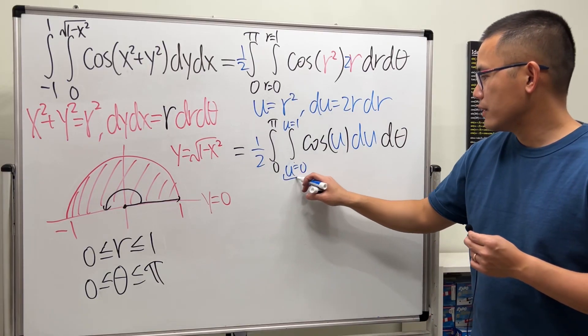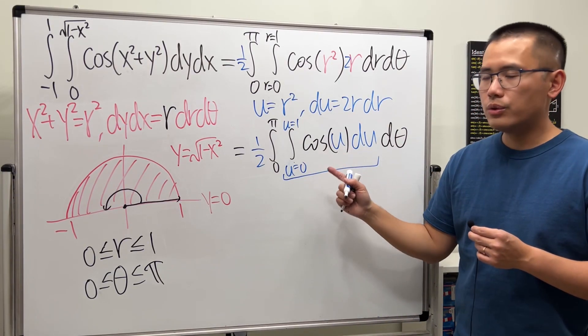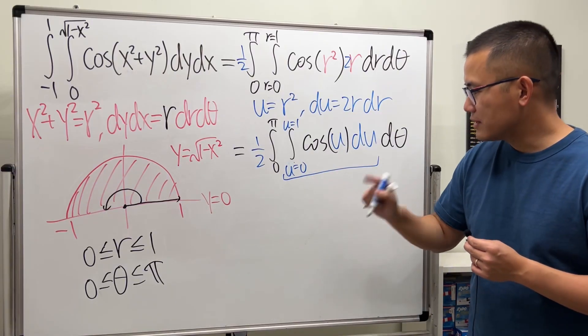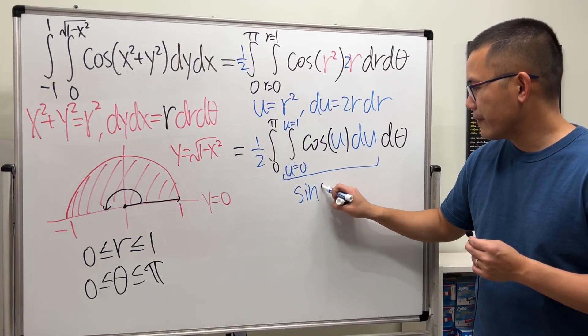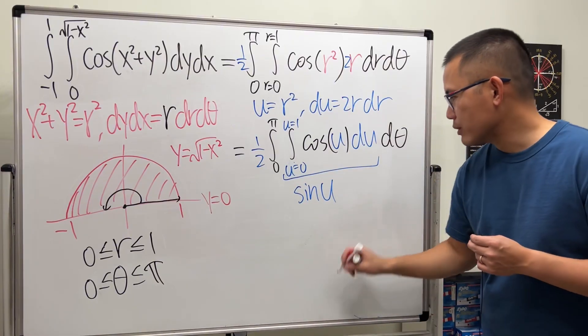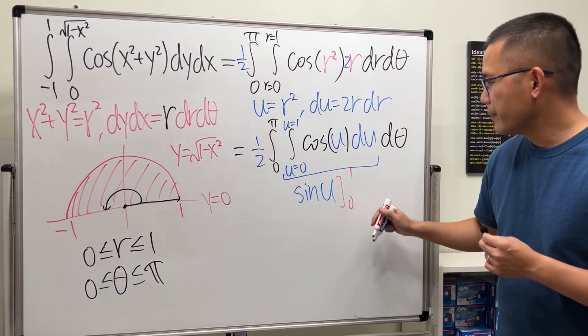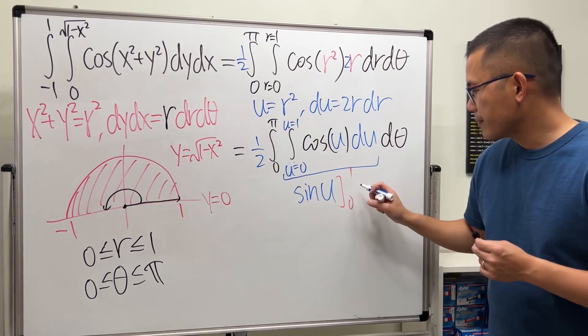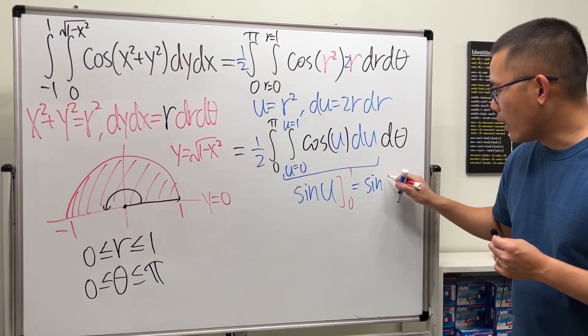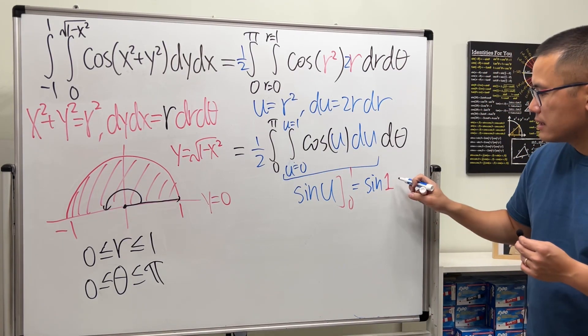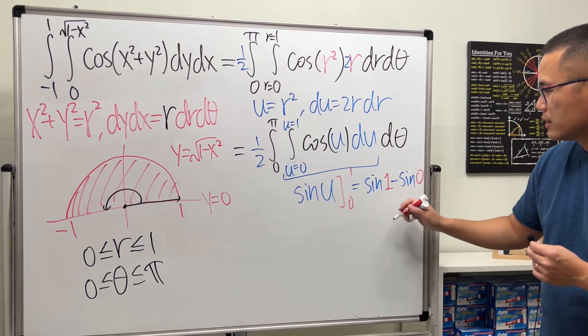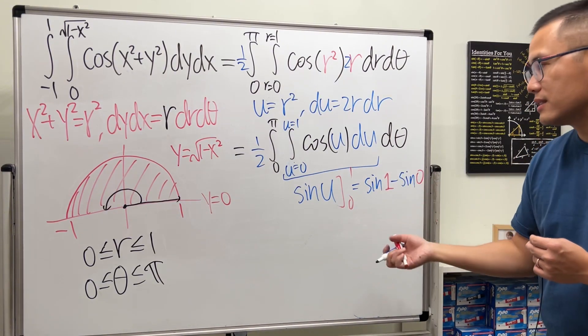Now let's just do this inside out. For this integral on the inside, integrating cosine u, we get positive sine u, and then we will just have to go from 0 to 1. So that will give us sine 1 minus sine 0, but sine 0 is 0, so this doesn't matter. The inside is just sine 1.